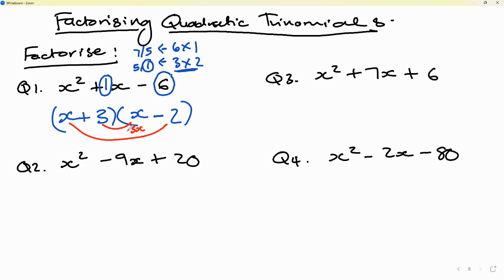3 times x is 3x. And x times minus 2 is minus 2x. And then subtract those two, does it actually end up at 1x? Yes, it does. 3x minus 2x does end up here. So I know that answer will definitely be correct.